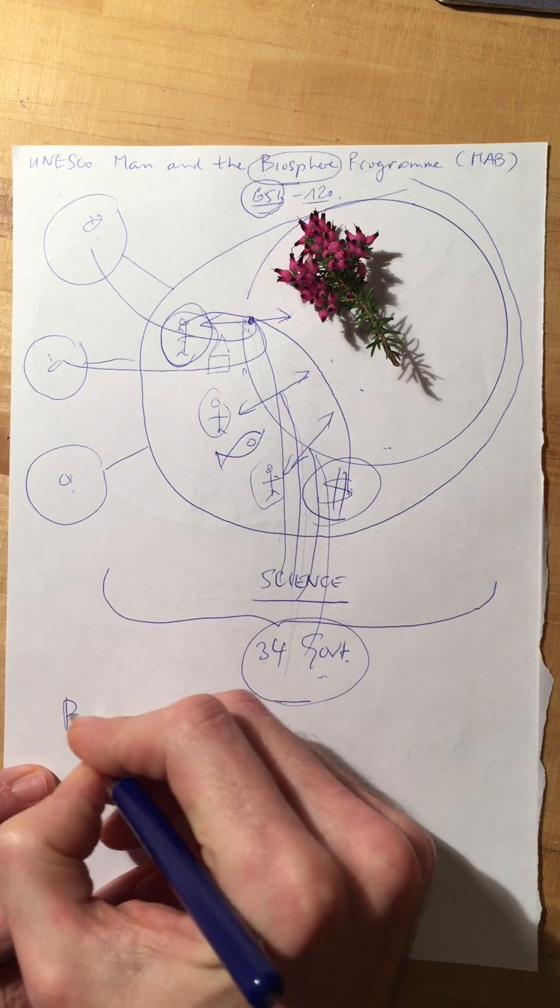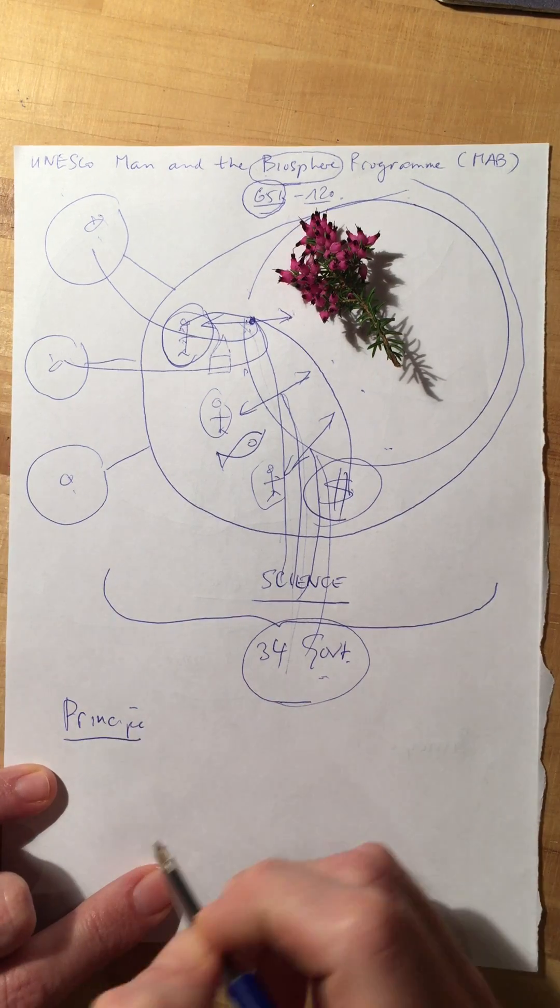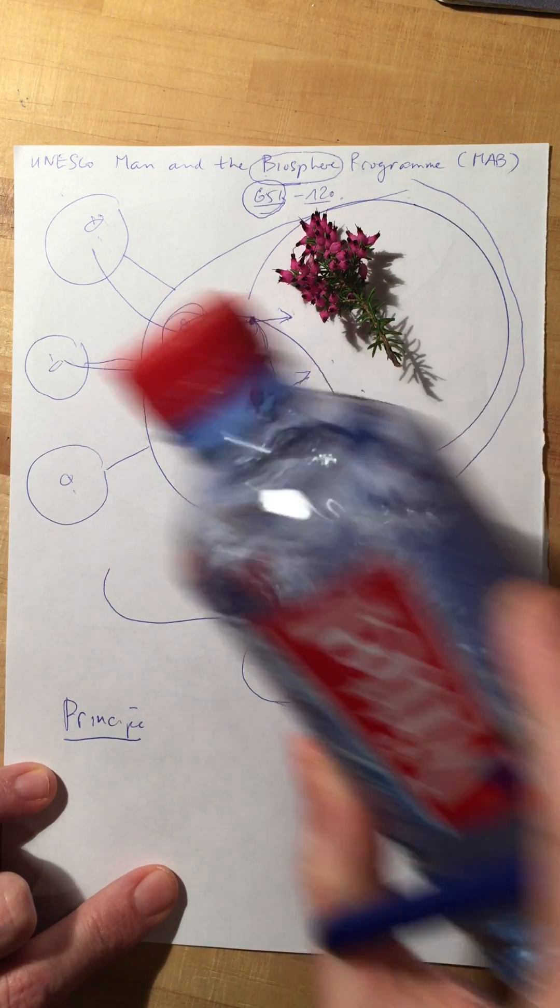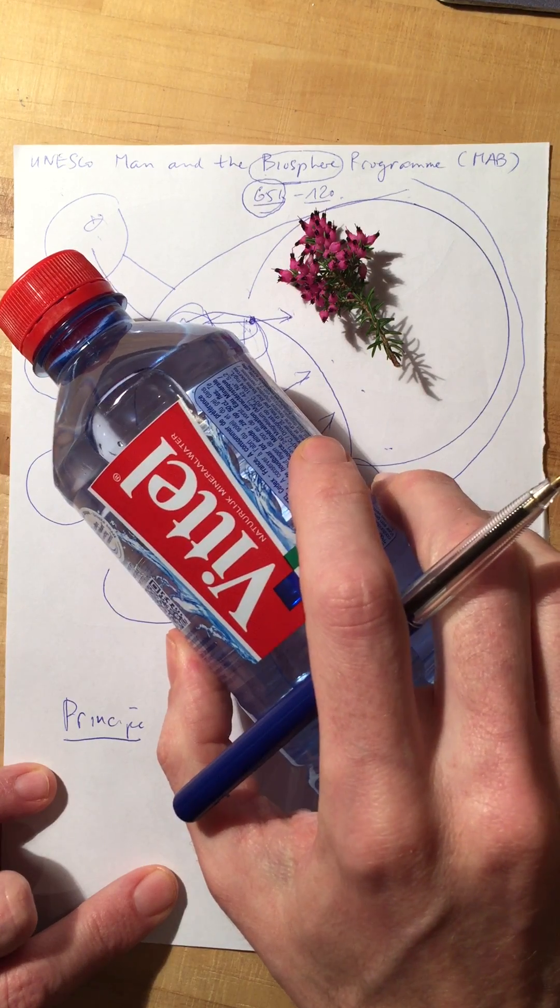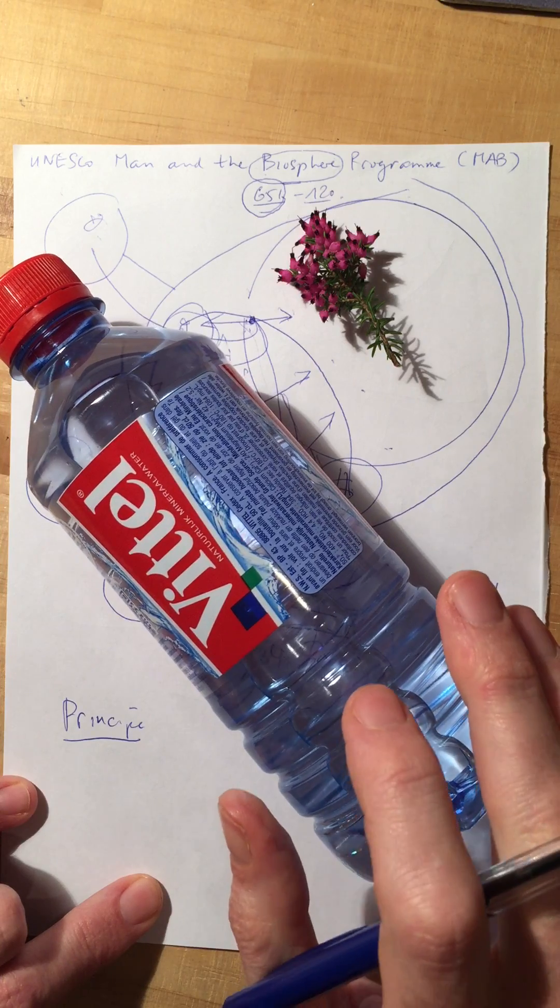A good example is the island Principe in West Africa. It's a biosphere reserve and it had a big pollution problem: plastic bottles. So the biosphere started a campaign against these bottles. The idea was very simple.